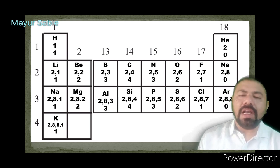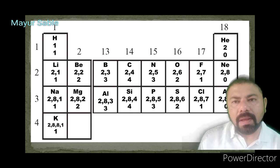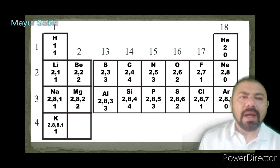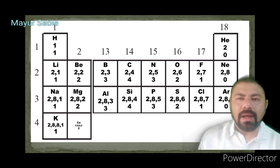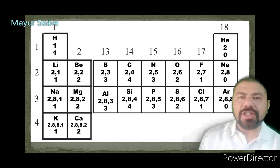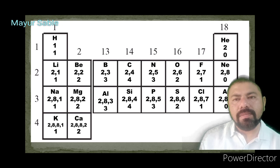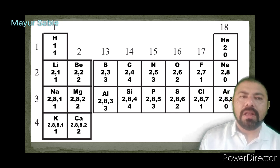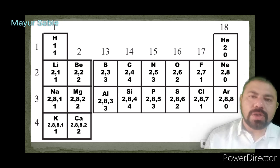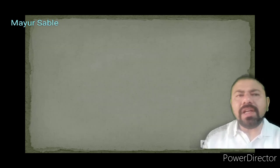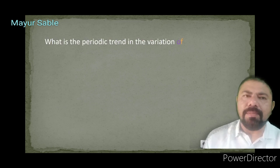Potassium has electronic configuration 2,8,8,1 (atomic number 19) — one electron in outermost shell, valency is 1. Calcium has electronic configuration 2,8,8,2 (atomic number 20) — 2 electrons in its valence shell. It can donate 2 electrons to acquire a configuration similar to argon, therefore its valency is 2.